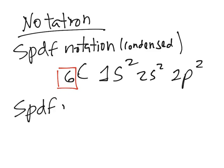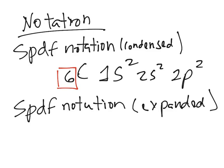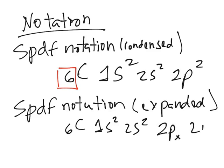Then there's the SPDF notation, but this time it's expanded. I'm going to use the same example for all of them. It's going to be 1s² 2s², and then you separate the following subshell into its different MLs or orientations. It'll be 2px¹ and 2py¹—we have one electron in each. Not many people write it like this because it'll take a lifetime to write the whole thing.